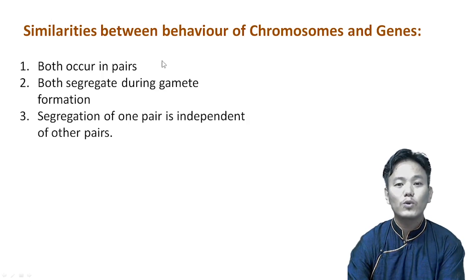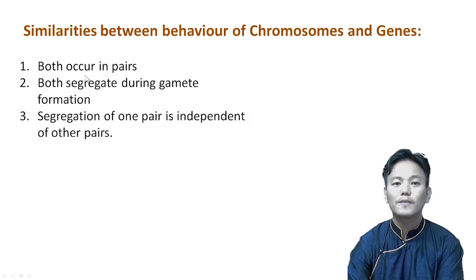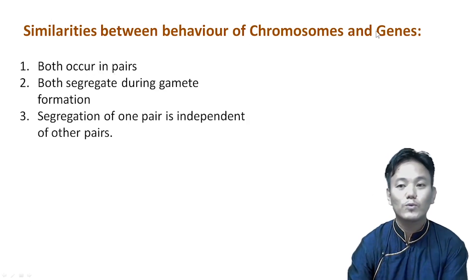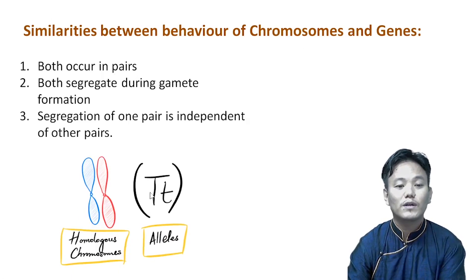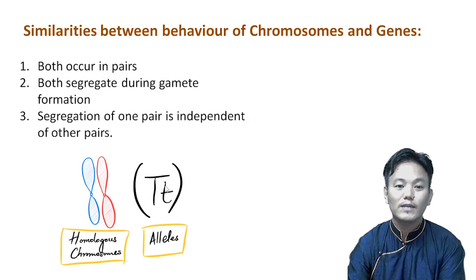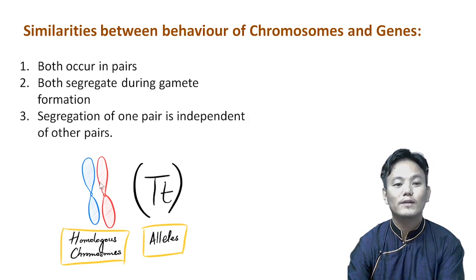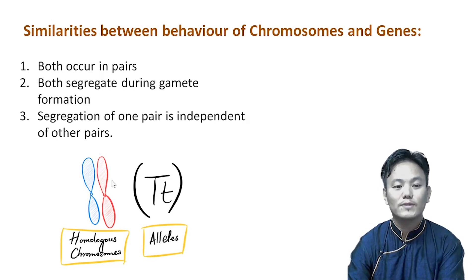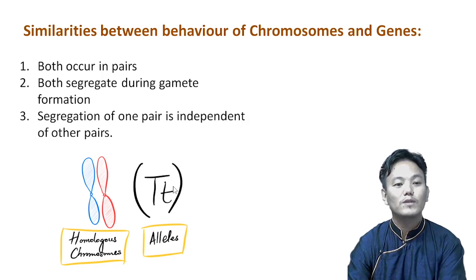Sutton and Boveri observed that both chromosomes and genes occur in pairs. Mendel talked about a pair of factors which controls a character — these alleles or pair of factors occur in pairs. Similarly, chromosomes also occur in pairs — we call them homologous chromosomes, one coming from the father and one from the mother. Just like Mendel's alleles, they also occur in pairs — one from the father and one from the mother. That is one similarity.